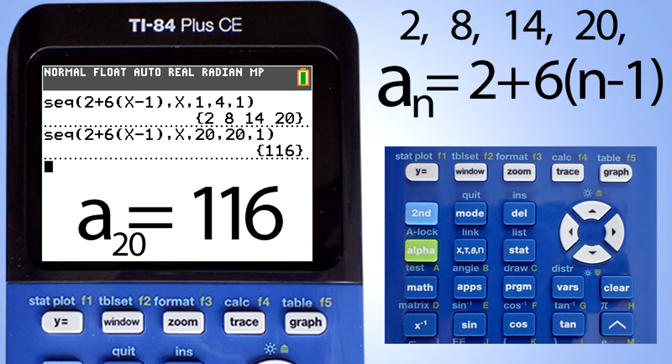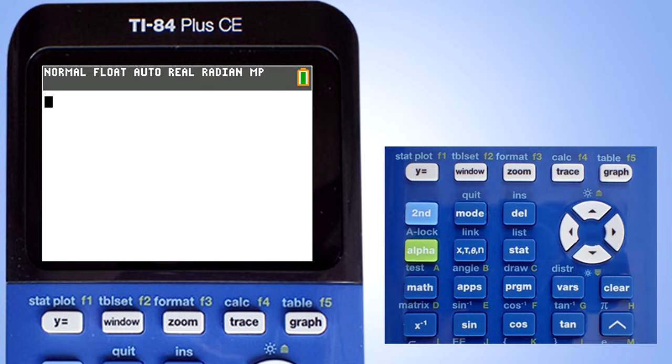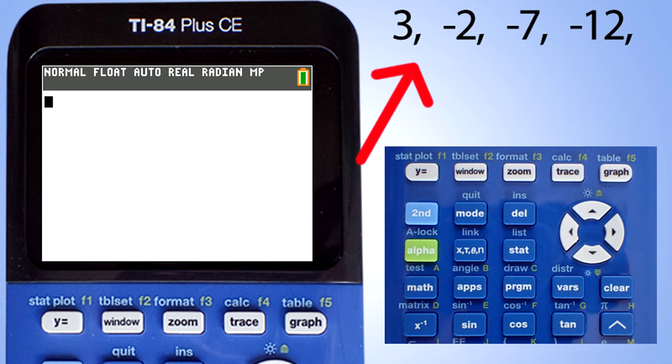We are going to do one more problem. This problem involves negative numbers. Press the clear button here to clear this screen. We are going to work with this arithmetic sequence: 3, negative 2, negative 7, and negative 12.